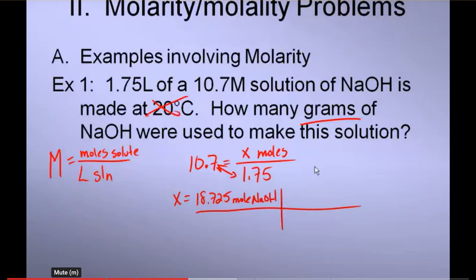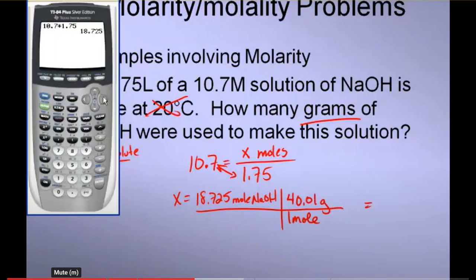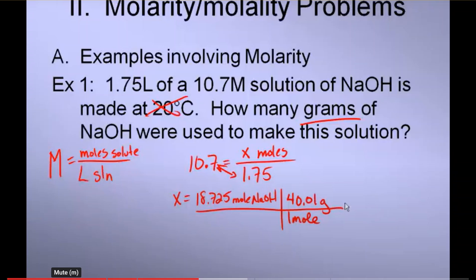So, throw that into a quick mole conversion. One mole goes on the bottom. 40.01 grams goes on the top. Make that line a little long. Go back to my handy-dandy calculator. Number's already there, so I'm just going to go times 40.01. Enter is 749.2, but I need three significant figures.